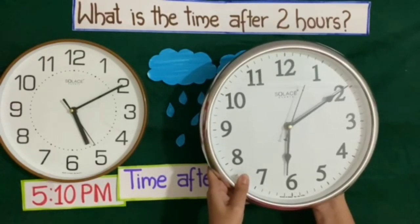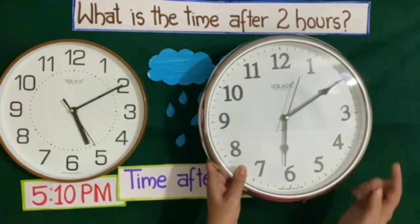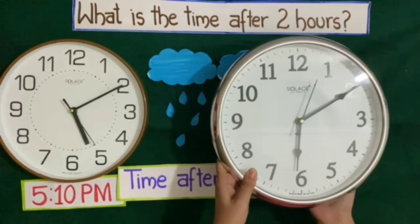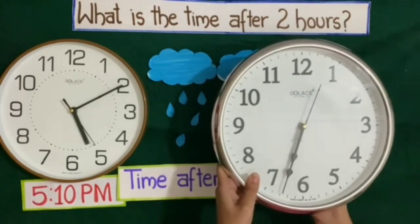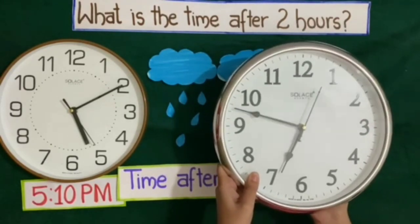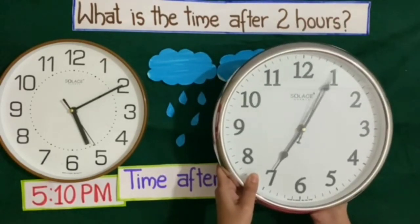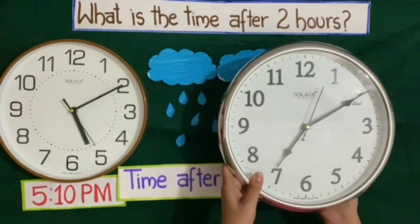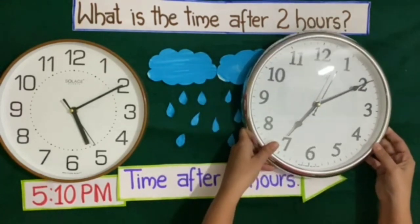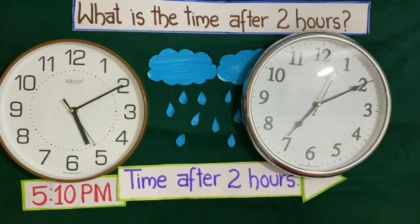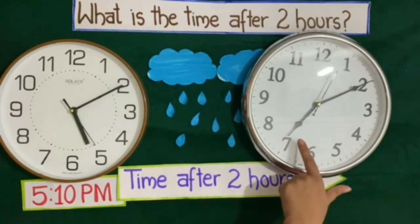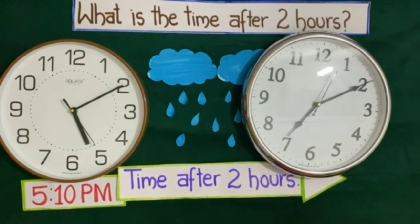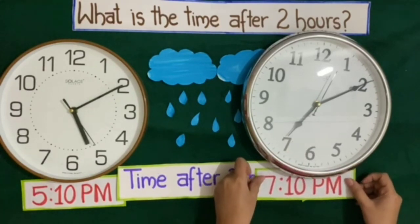After 1 hour the time will be 6:10, and after 2 hours the time will be 7:10 PM. So when the rain stopped after 2 hours, the time was 7:10 PM.